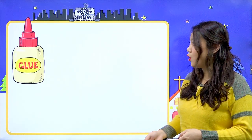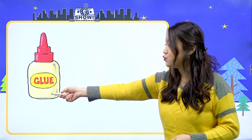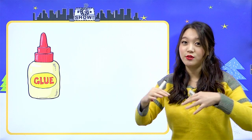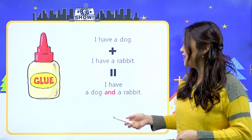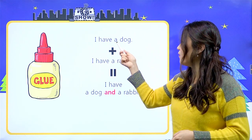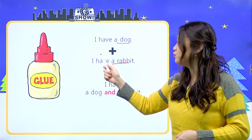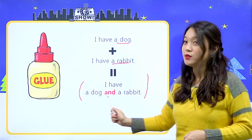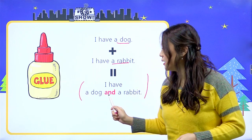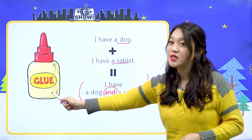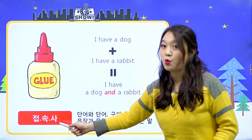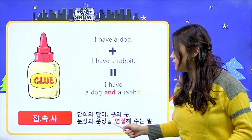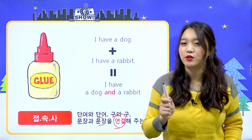그럼 들어가기 앞서서, do you remember this glue? 여기에 있는 이 아주 귀여운 글루 기억나요, 우리 친구들? 우리 이걸로 뭘 붙였어요? 문장을 붙였었죠. I have a dog, 그리고 I have a rabbit. 이 두 문장을 이어서 'I have a dog and a rabbit' 이런 문장을 만들었었어요. 여기서 and가 접착제의 역할을 하는 접속사였고, 접속사는 단어와 단어, 구와 구, 문장과 문장을 연결해주는 말이다 라고 공부를 했었죠.